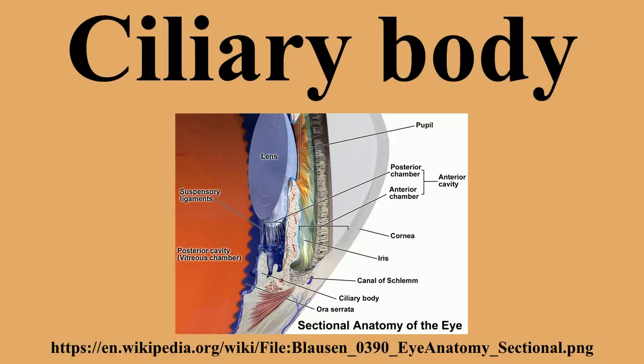The ciliary body is a part of the eye that includes the ciliary muscle, which controls the shape of the lens, and the ciliary epithelium, which produces the aqueous humor. The ciliary body is part of the uvea, the layer of tissue that delivers oxygen and nutrients to the eye tissues. It joins the ora serrata of the choroid to the root of the iris. It is a ring-shaped thickening of tissue inside the eye that divides the posterior chamber from the vitreous body. It contains the ciliary muscle, vessels, and fibrous connective tissue. Folds on the inner ciliary epithelium are called ciliary processes, and these secrete aqueous humor into the posterior chamber.